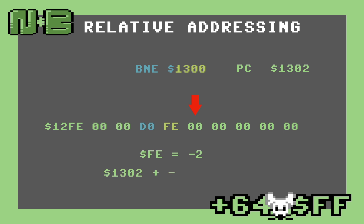To calculate the branch address, the CPU adds the offset to the program counter to produce 1300, and then branches.